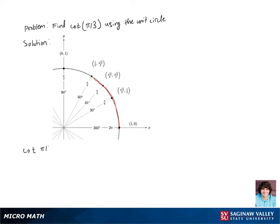So cotangent of π/3 is just going to be one-half over root three over two.